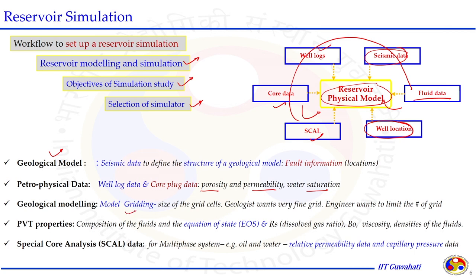Geological modeling means gridding of the reservoir domain. The reservoir domain is large — several meters in all dimensions — so gridding is required to discretize the system. The size of the grid cell affects both accuracy and computational time. Often, geologists want very fine grids to represent information as accurately as possible, while engineers want to limit the number of grids to reduce computational time for solving the simulation problem.